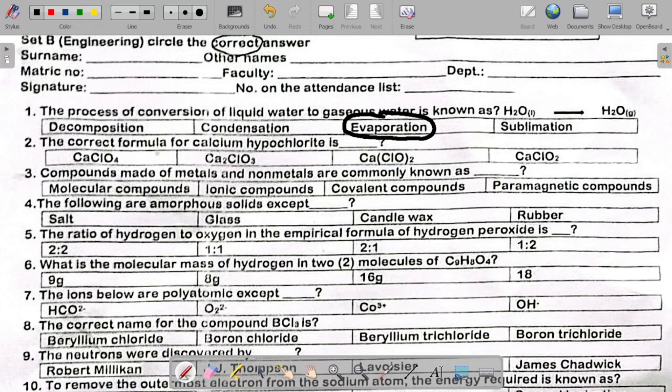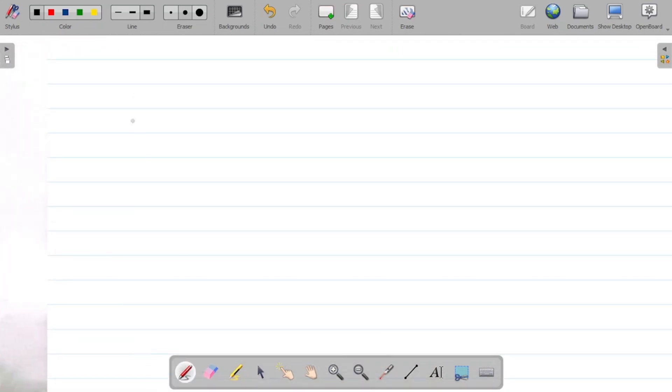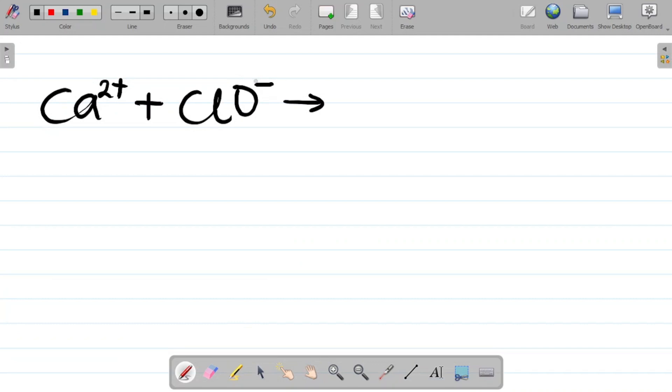The next thing says the correct formula of calcium hypochlorite is? To get this, you should know that calcium is Ca2+, combines with the hypochlorite. The hypochlorite ion is actually ClO-, so these two combine. In the combination, the charge here, which is minus 1, comes down here. So it becomes Ca, then the 2 comes this way here.